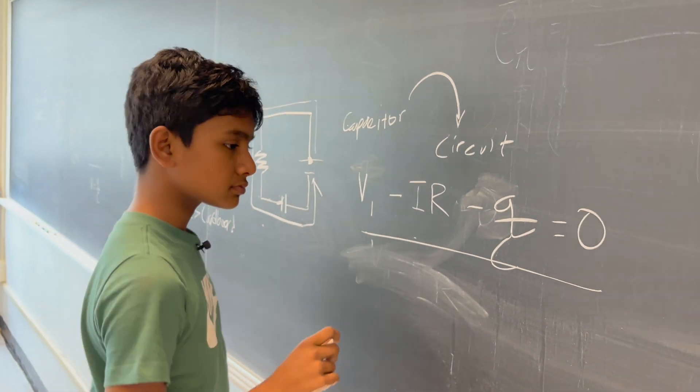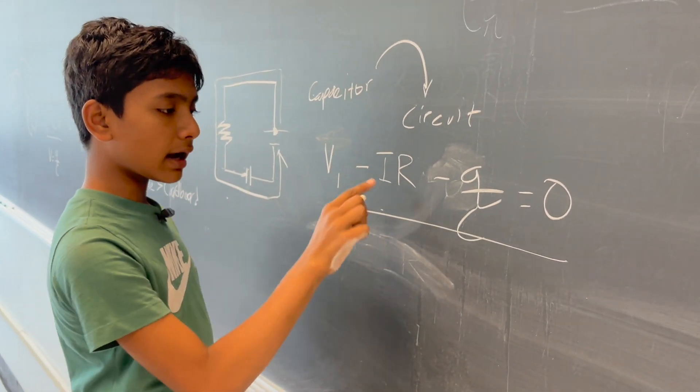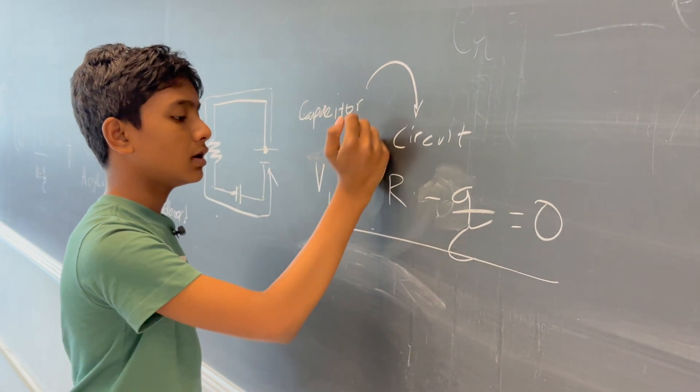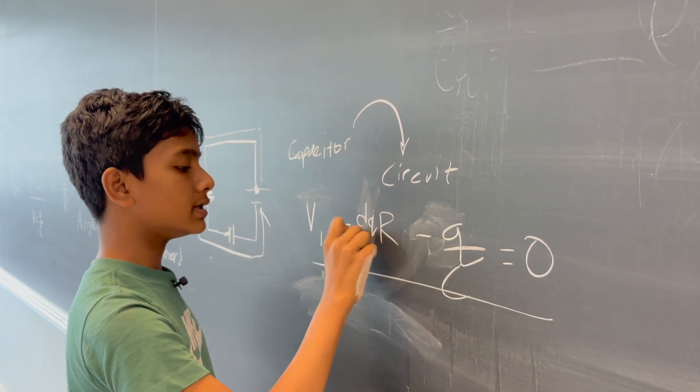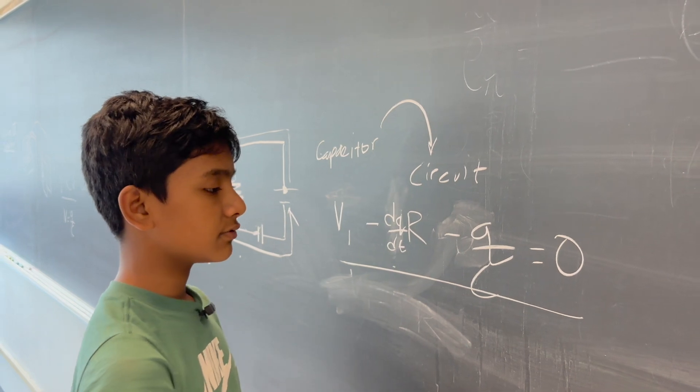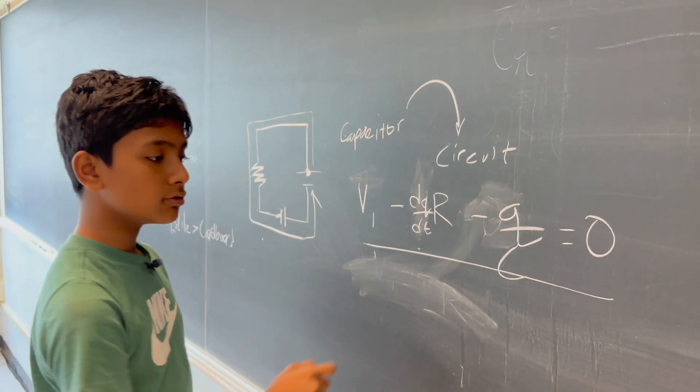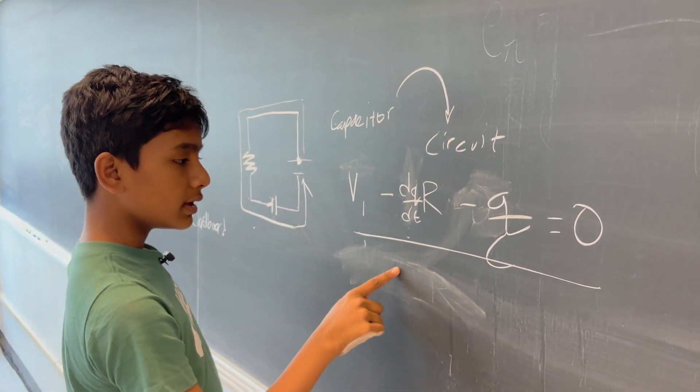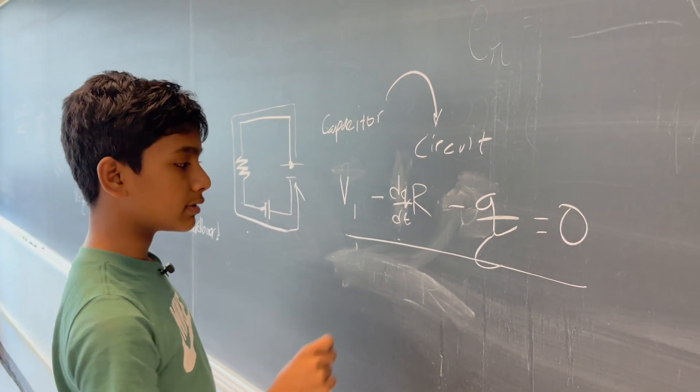So now, you'll recognize that I is actually the derivative of Q over time, dQ dt. So, here, we have an extremely classic equation.